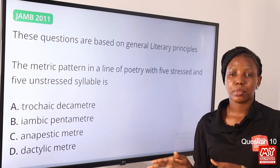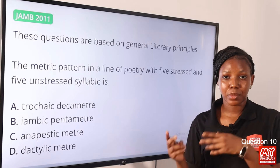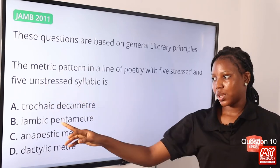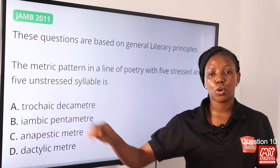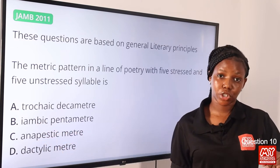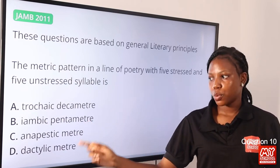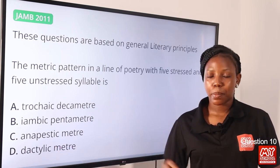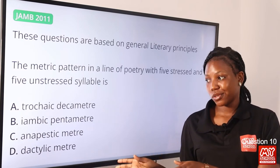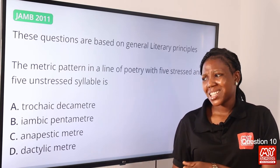Don't forget that the question says five and five, so pentameter makes option B the answer. Trochee means the first syllable is stressed and the second is unstressed. Iambic means the first syllable is unstressed and the second syllable is stressed — so iambic pentameter gives us five stressed and five unstressed syllables. For anapestic, the first and second syllables are unstressed while the third is stressed. For dactylic, the first syllable is stressed while the second and third are unstressed. So the answer is option B, iambic pentameter.